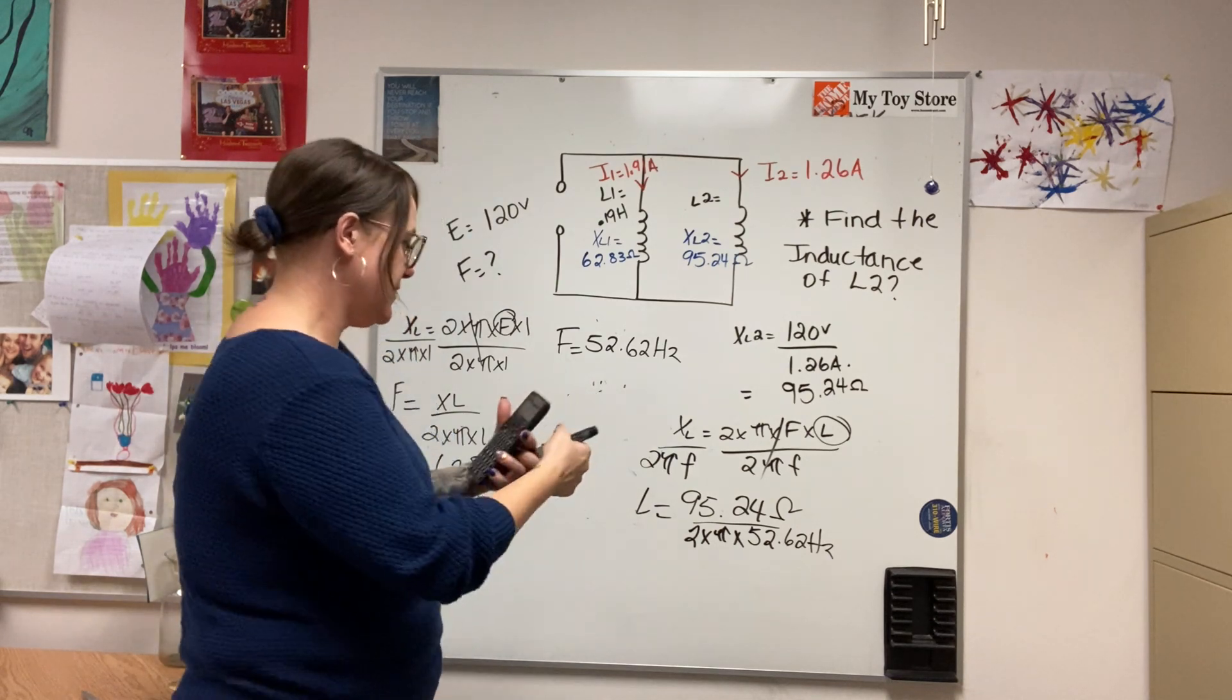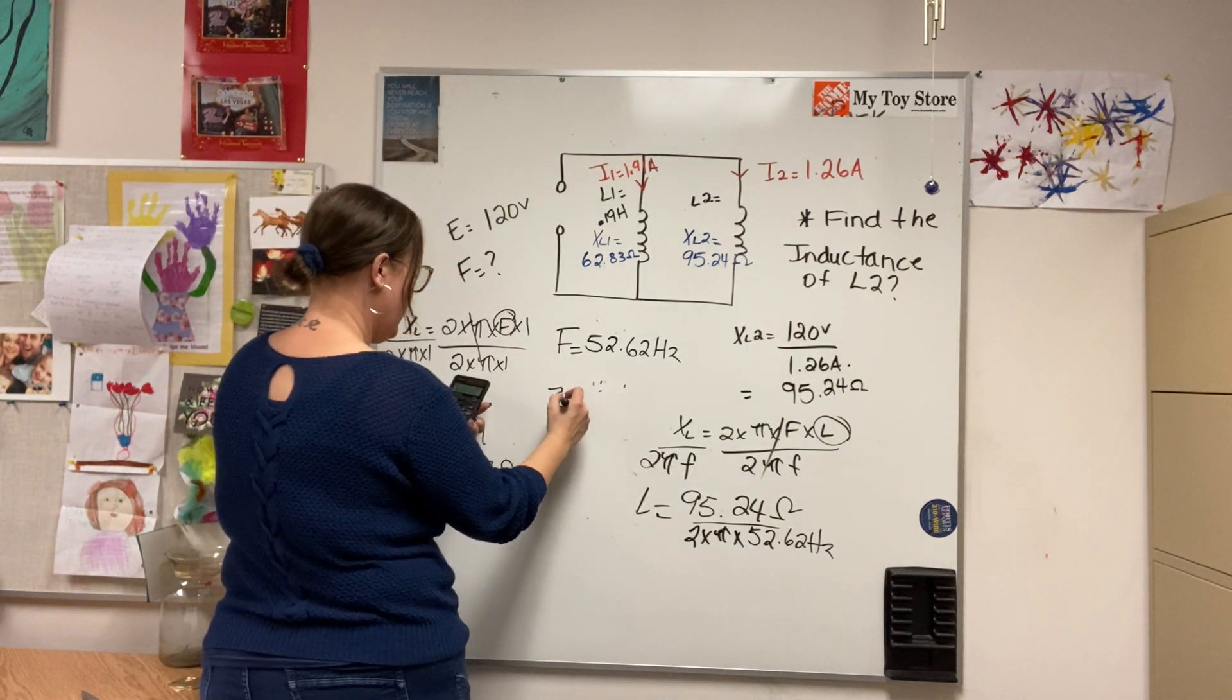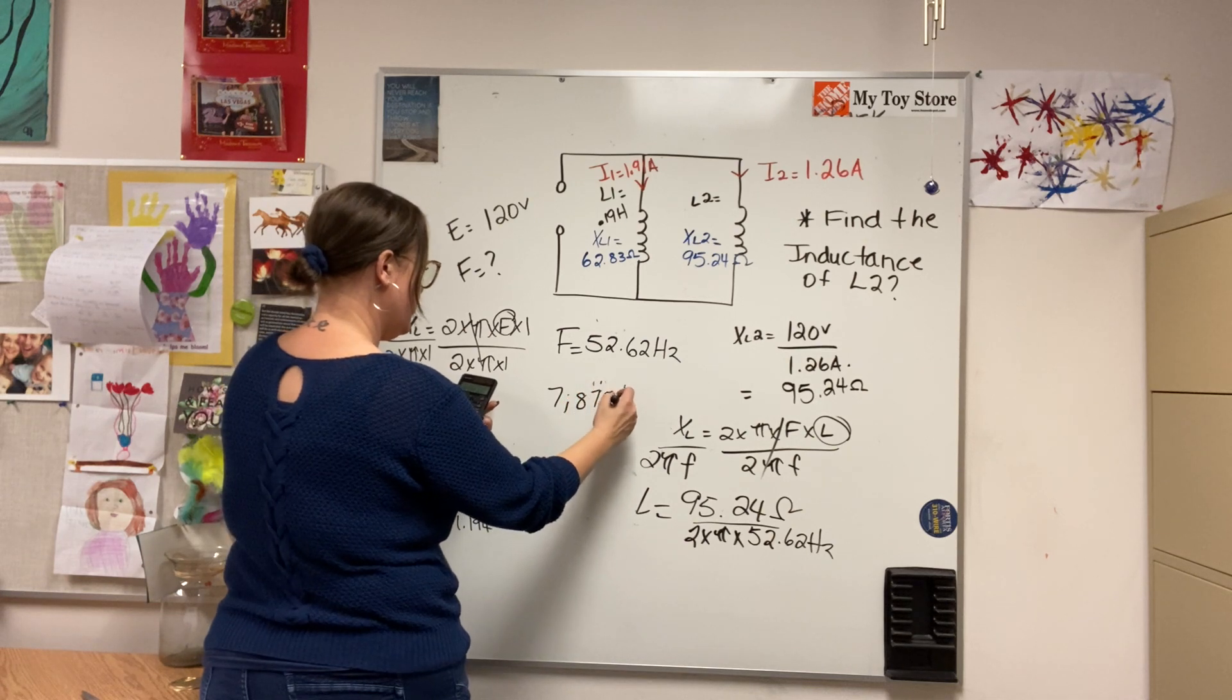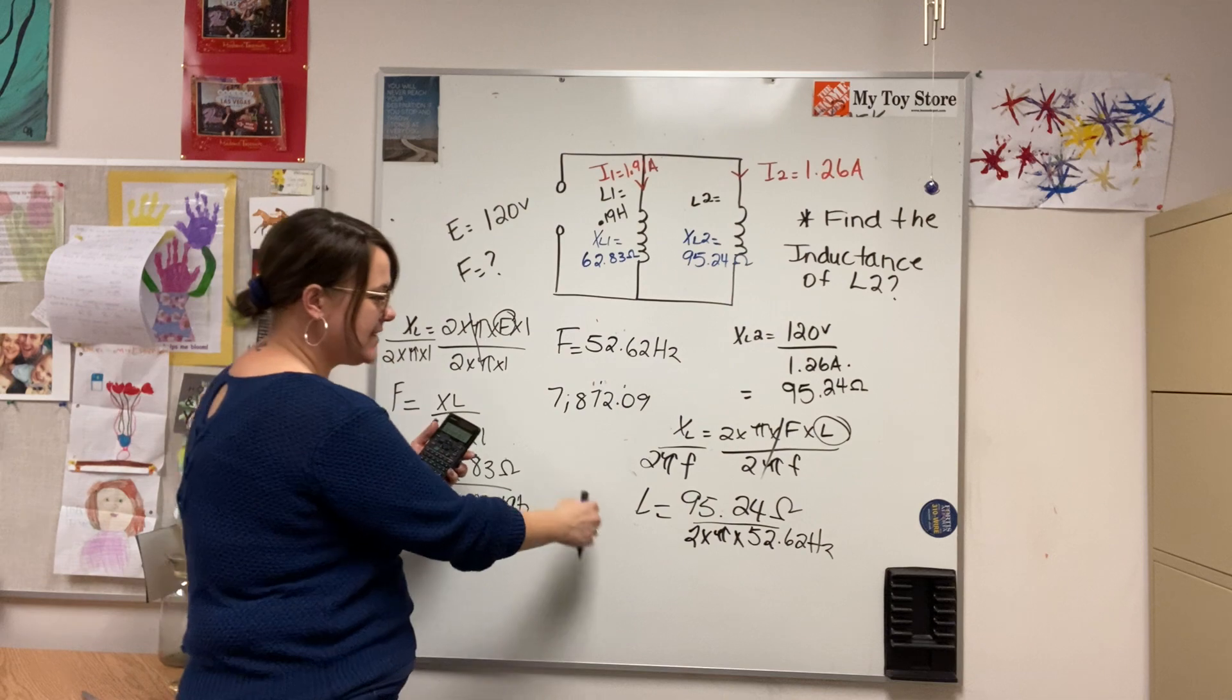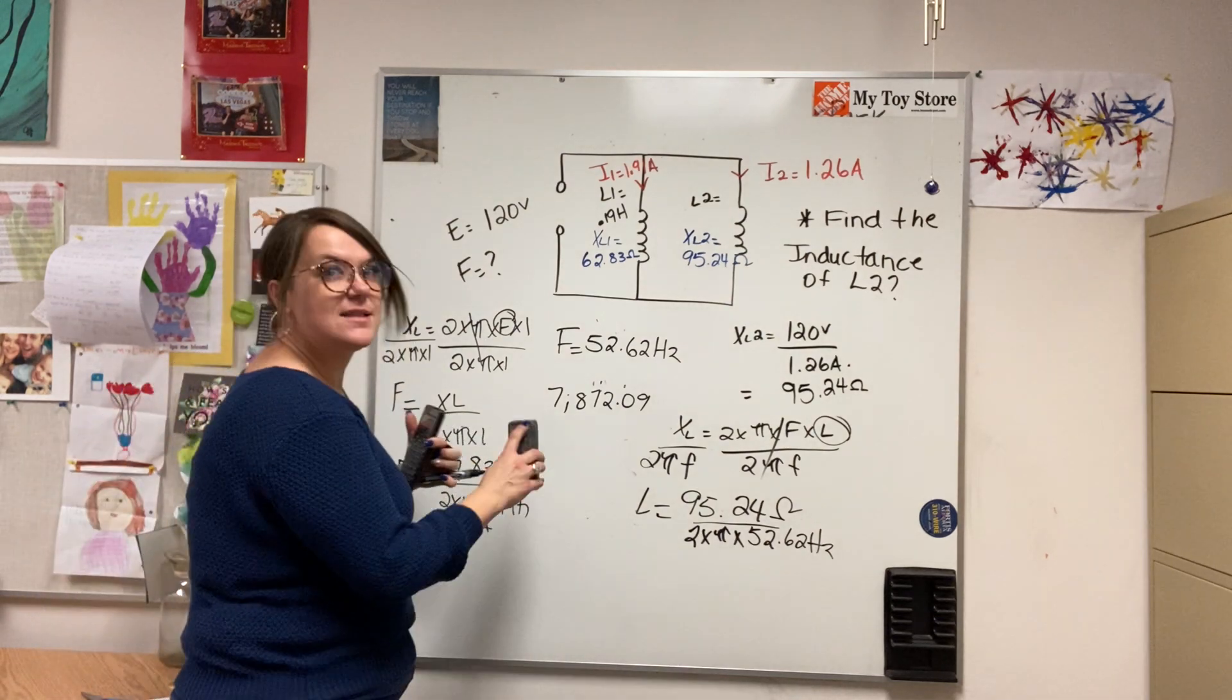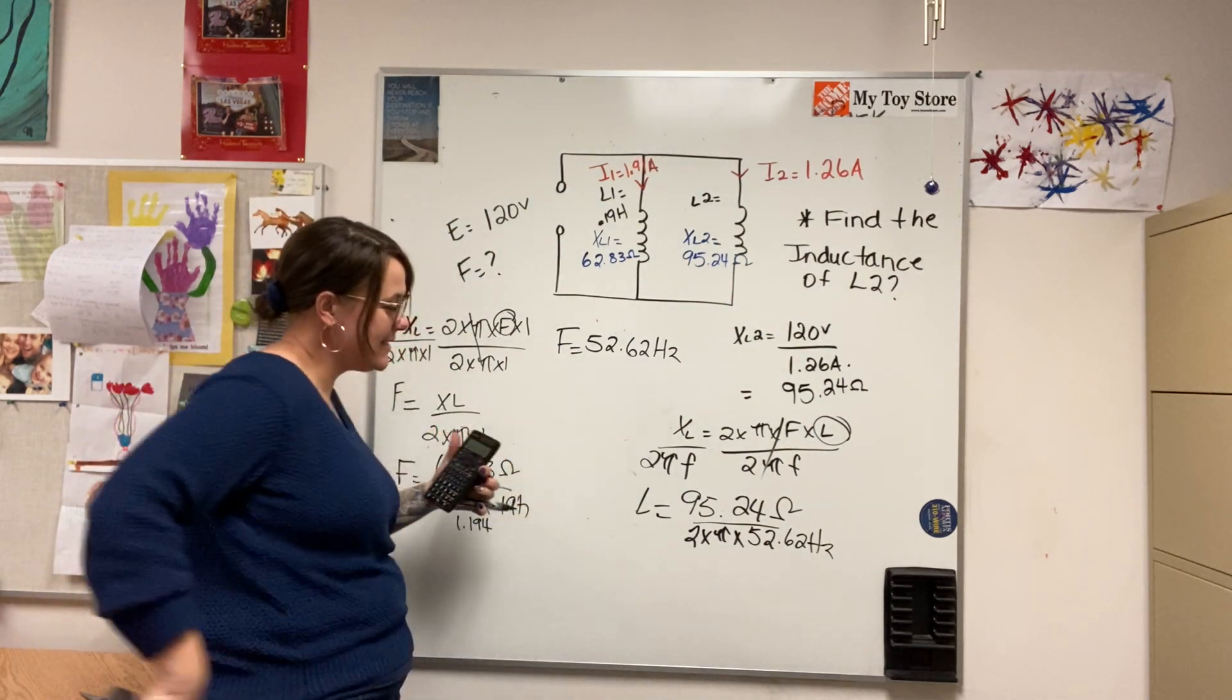And that would be 95.24 divided by 2 times pi times 52.62 equals, that's 7,872.09. That is not right. So let me just get the bottom number.